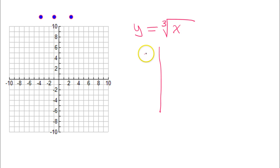Now, think about x values that would be easy to take the cube root of. Of course, it would be easy to take the cube root of zero, because that would just be zero. And the cube root of one is one.